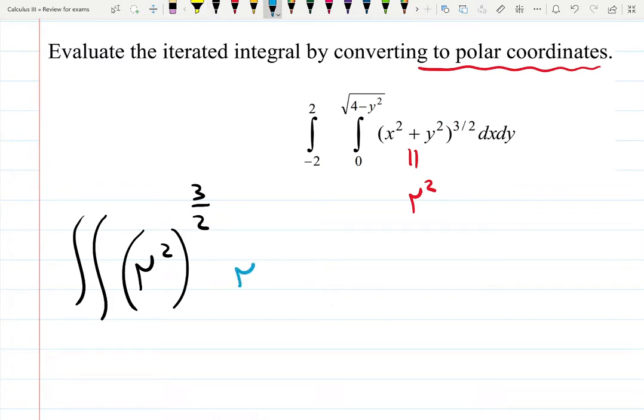So the integral is definitely going to be integral integral r squared raised to the three halves. And then don't forget the formula r, dr, d theta, just like a pirate. Now we need to figure out everything else.